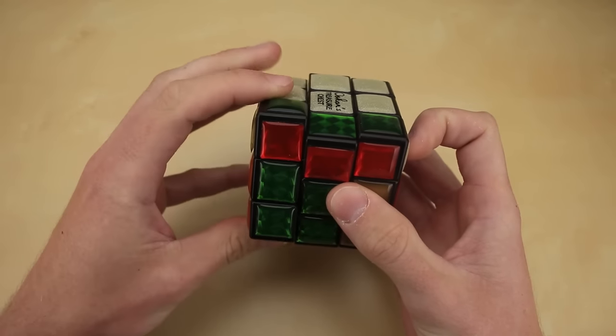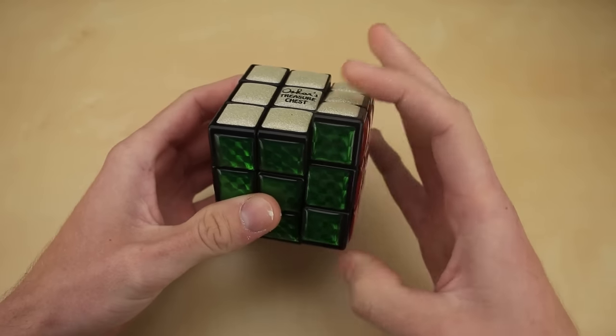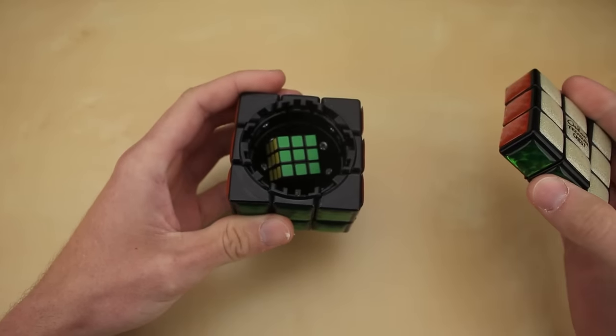The Oscar's treasure chest is a Rubik's Cube with a secret compartment inside that can only be accessed once the cube is solved.